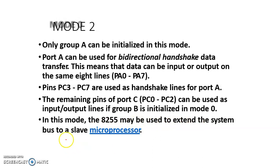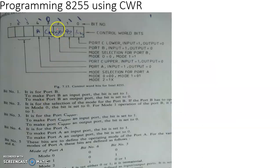The 8255 may be used to extend the system bus to a slave microprocessor. Now, programming the 8255 using the control word register: besides the three registers present in the 8255 associated with each port, there is one more register — referred to as the control word register. It is given this name because the status of different bits or flip-flops of this register decide the nature of the ports or the way in which the three different ports are being programmed in the 8255.